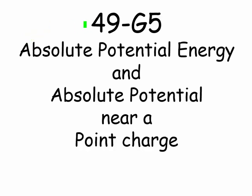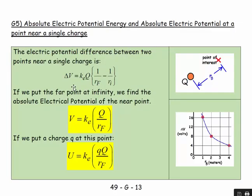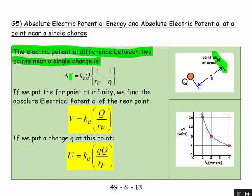Welcome, this is 49g5 on absolute potential energy and absolute potential near a point charge. We're not looking at potential energy differences or potential differences — not the change between two points — we're asking what is the potential at a location in absolute terms, or if we put a charge there, what is the potential energy in absolute terms. The electrical potential difference between two points near a single charge is delta V equals kQ times (1/r_final minus 1/r_initial).